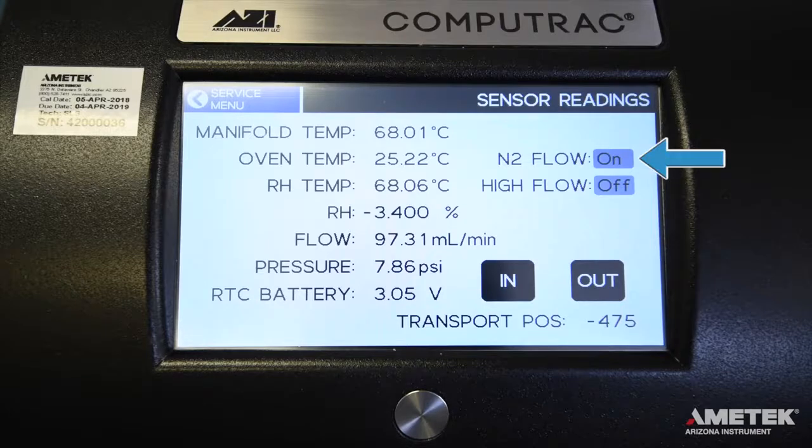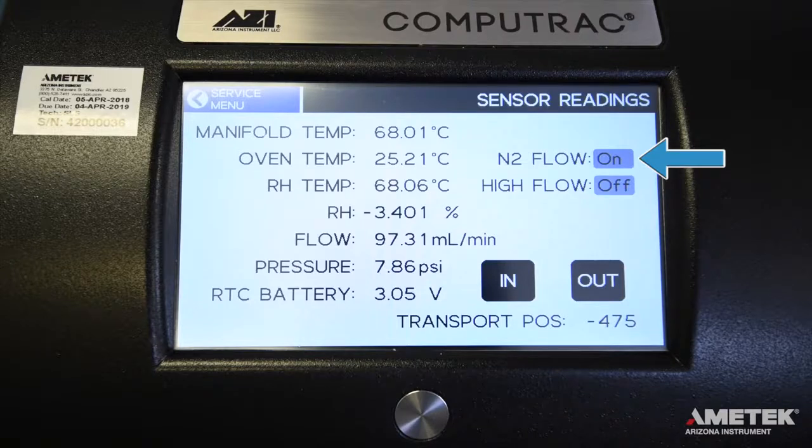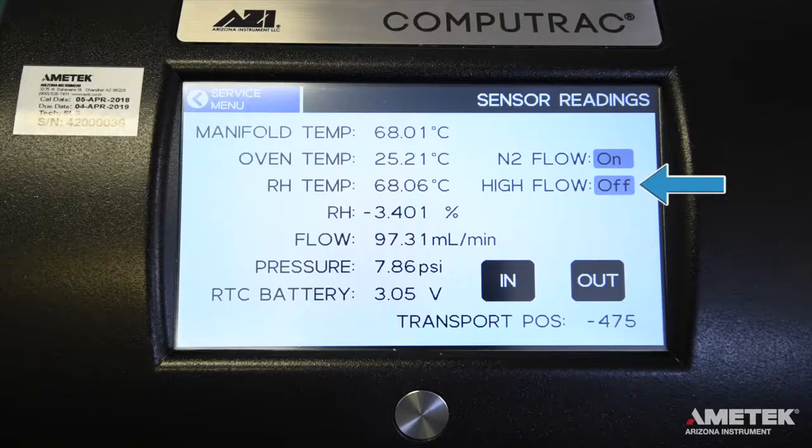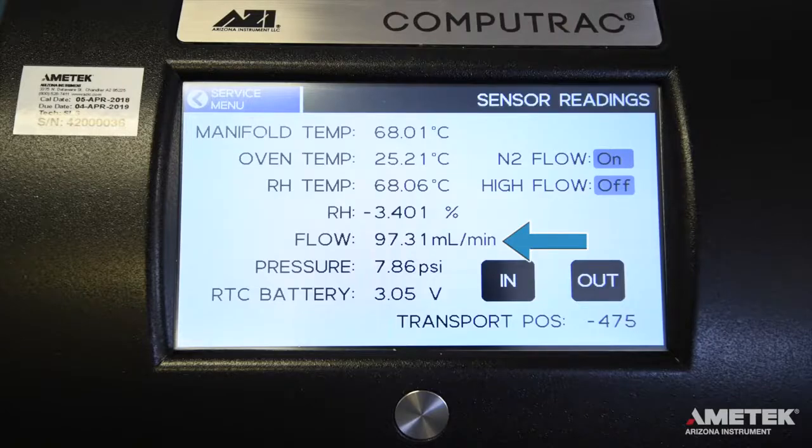N2 flow is on. This represents the carrier gas flow and is applicable whether you are using nitrogen or compressed air. High flow is off. Flow is 95 plus or minus 5 milliliters per minute. Touch the gray area next to N2 and high flow to toggle them on or off if needed.